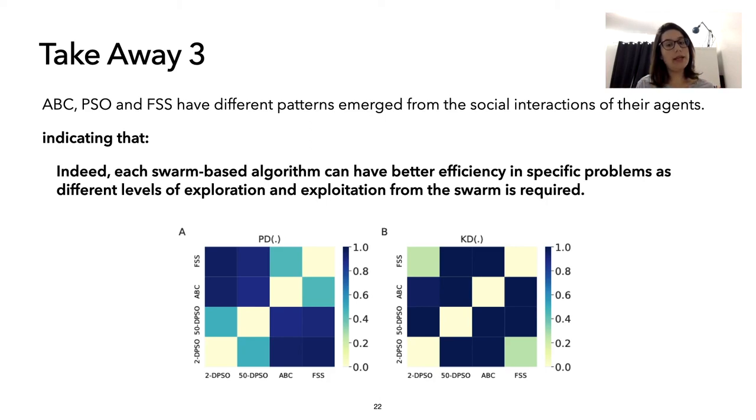But we point out here that we still have a lot to disentangle, and our next question will be how can we identify what are the functions that each algorithm works the best, taking into account the performance, but also taking into account the characteristics of the social interaction within the swarm.